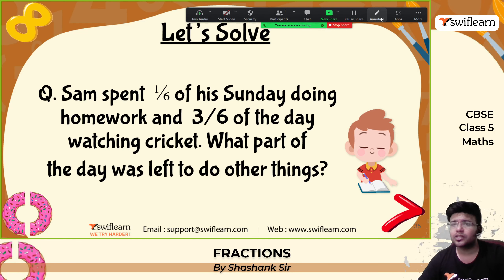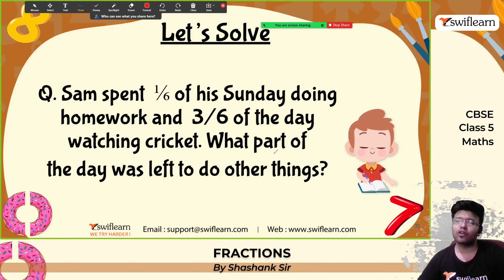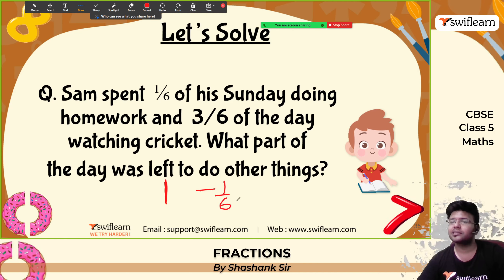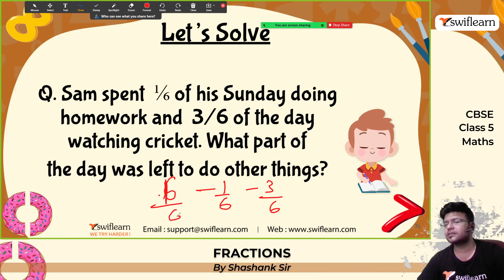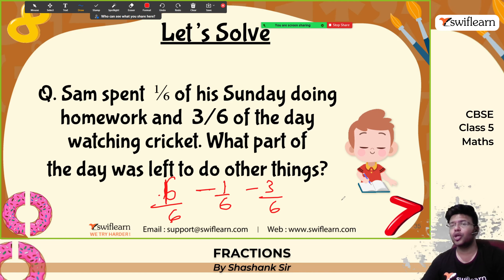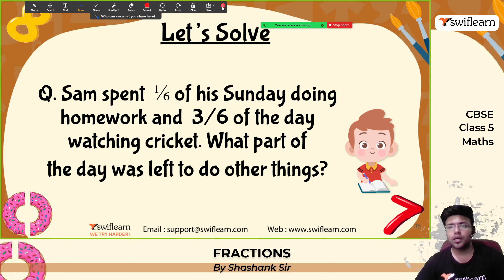Word problem: Sam spent one-sixth of his Sunday doing homework and three-sixths watching cricket. What part of the day was left? The total is 1, which can be written as 6 by 6. So 6 by 6 minus 1 by 6 minus 3 by 6: 6 minus 1 is 5, 5 minus 3 is 2. So two-sixths of the day was left, which is nothing but one-third. One-third of the total day was left.